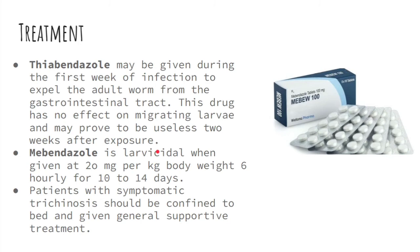For treatment, thiabendazole may be given in the first week of infection to expel the adult worm from the gastrointestinal tract. Mebendazole is also effective when given at 20 mg per kg body weight every 6 hours for 10 to 14 days. Patients with symptomatic trichinosis should be confined to bed and given general supportive treatment, since this disease is self-limiting.